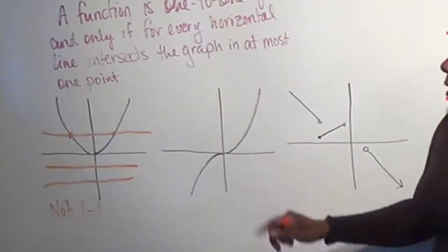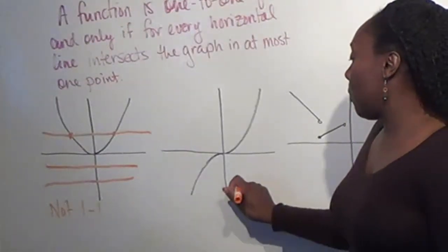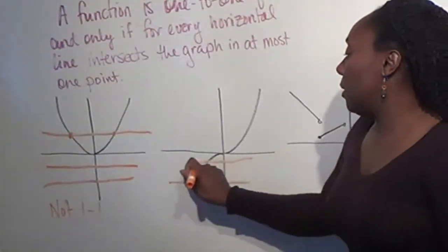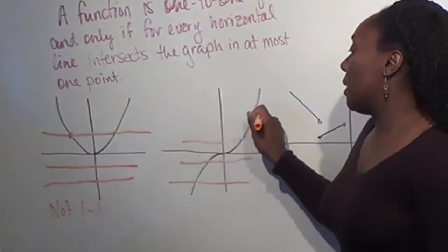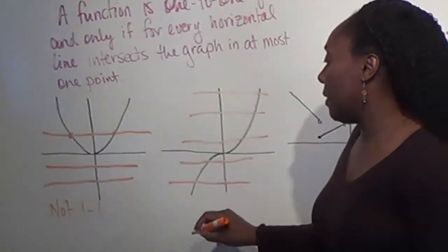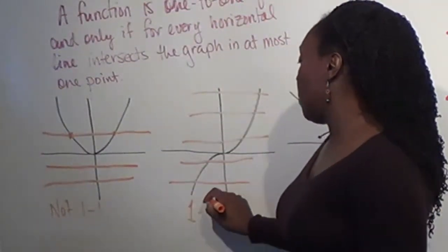In this case, it does not matter where I draw my horizontal line. We can see it's always going to hit in at most one place, so this one is a one-to-one function.